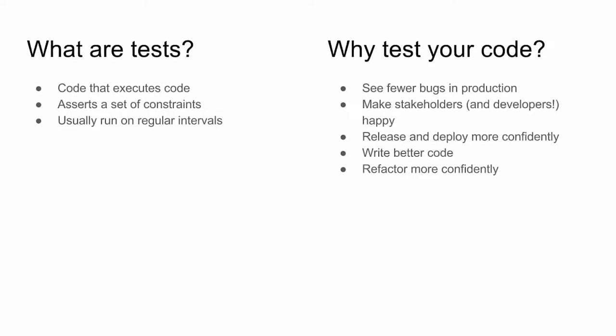Broadly speaking, what are tests? They're code that executes your code and asserts a set of constraints, basically making sure everything is functioning the way you expect it to. The obvious reason to write tests is to see fewer bugs in production, which makes stakeholders and developers much happier. Writing automated tests alleviates scenarios where everyone is scared to touch a part of the codebase or do a deployment on a Friday. It also helps you write better code, since testable code is generally considered better code.